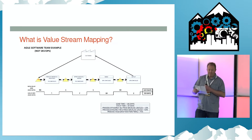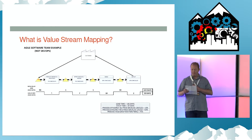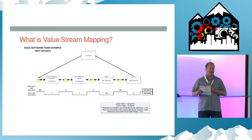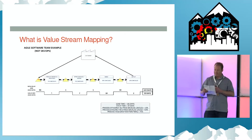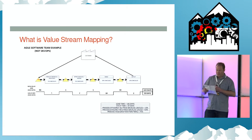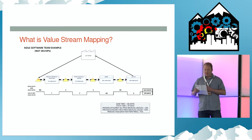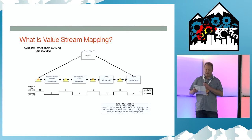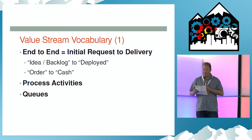At DevOps conferences, we hear a lot about value streams, but what exactly is it and how can we use it to improve our delivery pipeline? Value stream mapping is a lean technique for optimizing your value stream, your end-to-end process flow. Here's a picture of a complete value stream map. We'll go through each component through this presentation.